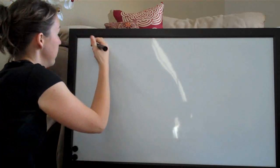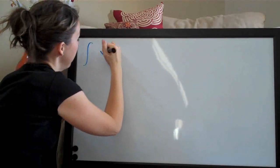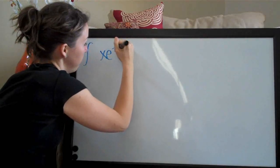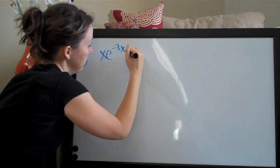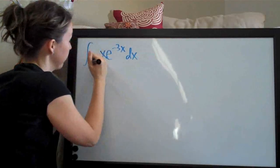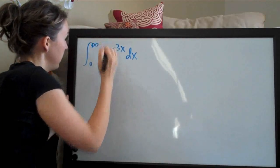Hi everybody, welcome back. We're doing another improper integral problem. This one is xe to the negative 3x dx on the range 0 to infinity.